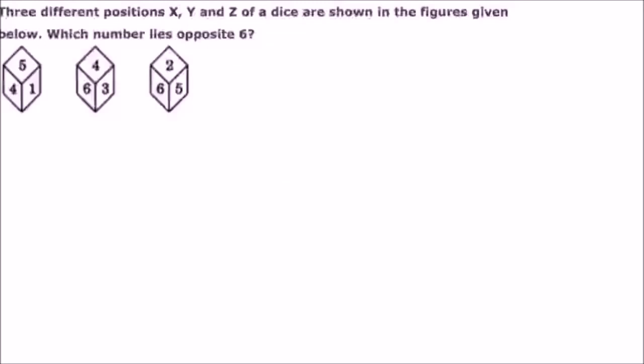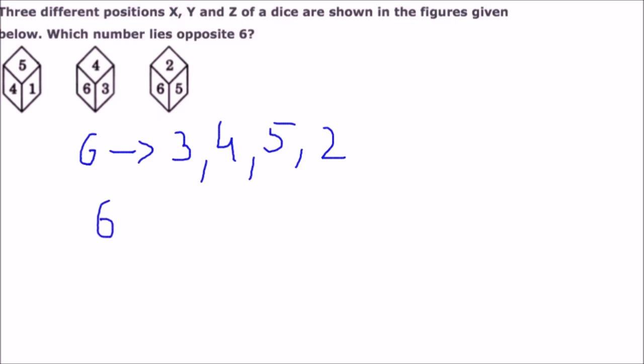Let's see another example. This time we are given three figures and asked to find the face opposite to the face containing 6. Again using the elimination method, we write all faces adjacent to 6. From figure 2, the numbers adjacent to 6 are 3 and 4. From figure 3, the adjacent numbers are 5 and 2. The remaining numbers are 6 itself and 1, so that simply means 1 is opposite to the number 6.